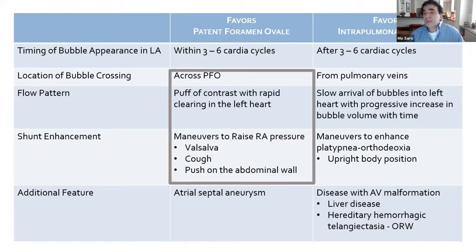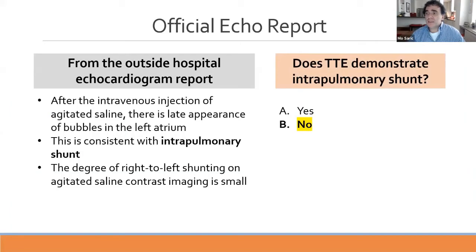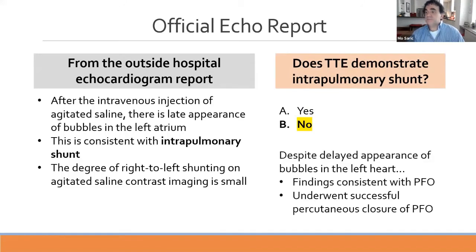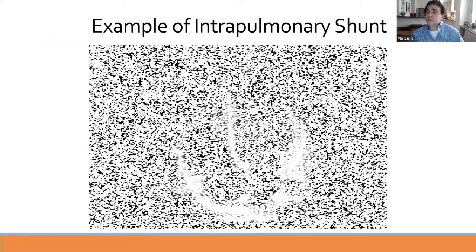So this patient did not have intrapulmonary shunt—she actually had patent foramen ovale despite the delayed appearance of bubbles. That's an important teaching point.